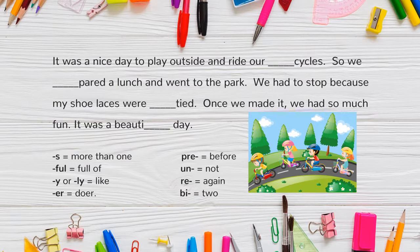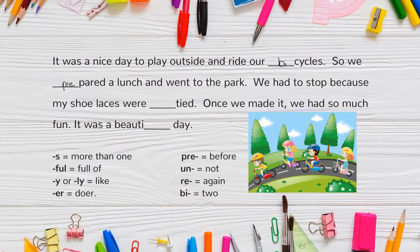This time, you will have to choose the correct affix to complete the story. Remember, you may add a prefix or a suffix to the root words. Let's go through it together. This is how the story reads: It was a nice day to play outside and ride our bicycles. So we prepared a lunch and went to the park. We had to stop because my shoelaces were untied. Once we made it, we had so much fun. It was a beautiful day.